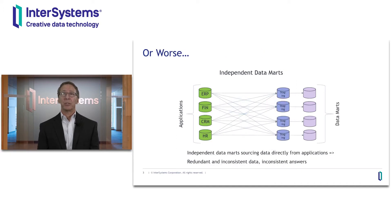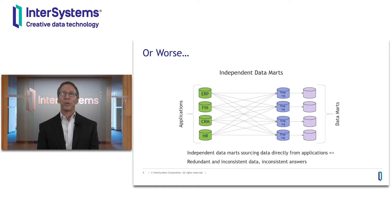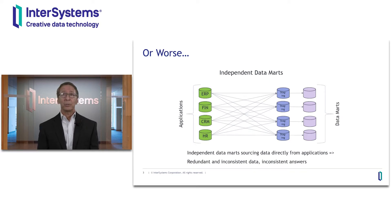I'm sure we've all seen implementations that populate individual data marts directly from the source applications, which typically results in duplication of data, inconsistent data in different data marts, and different answers depending on which data mart is processing the queries. And of course these aren't the only approaches — there are integration platforms, logical data warehouses, data lakes, data ponds, and so on. All of these approaches have provided value, but they've all fallen short of the ultimate goal: a single source of accurate, trusted, current, and consistent data that services all areas of the business, answering questions and serving as a single source for building new applications and digital transformation initiatives — ideally without creating additional copies of the data.